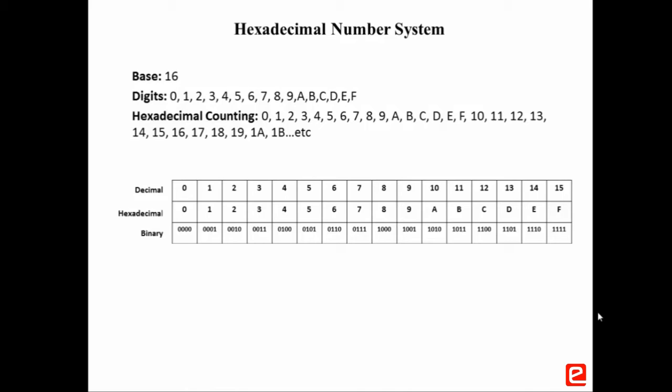In hexadecimal, values of digits 0 to 9 are the same as decimal values, and the value of A is 10 in decimal, B is 11, and so on. Consider an example: 1B to the base 16, which can be expanded as 1 into 16 to the power 1, plus 11 into 16 to the power 0, which equals 27 to the base 10 in decimal. There are many other number systems, but we will be dealing with only these three.